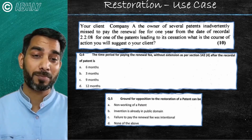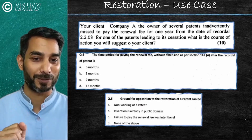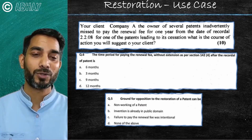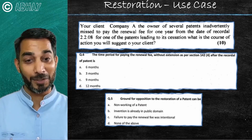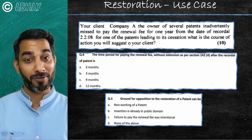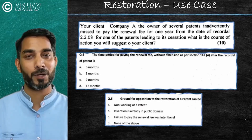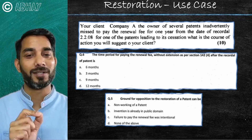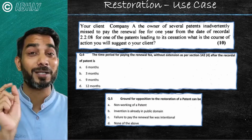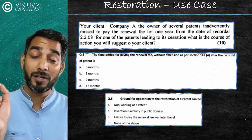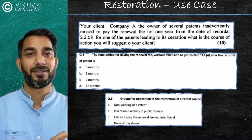Now, the ground for opposition to the restoration of a patent — an application for restoration can be opposed. Grounds of opposition to the restoration of patents can be: non-working of a patent, the invention is already in the public domain, failure to pay the renewal fee was intentional, or none of the above. So one of the grounds for opposition of restoration — not opposition of the patent, but opposition of restoration — is that failure to pay the renewal fee was intentional.